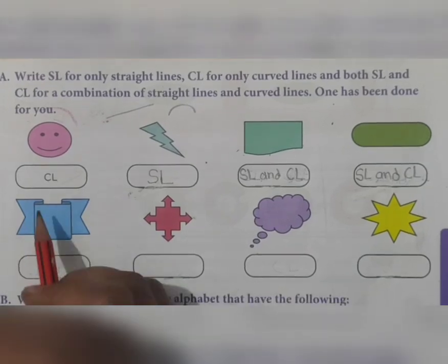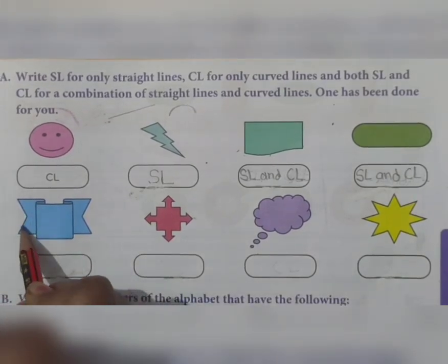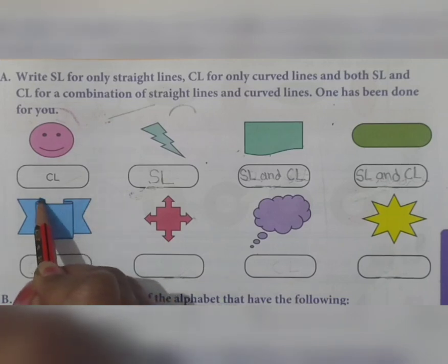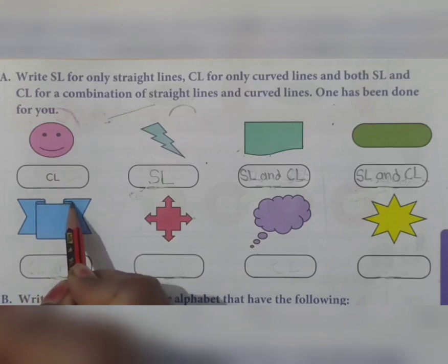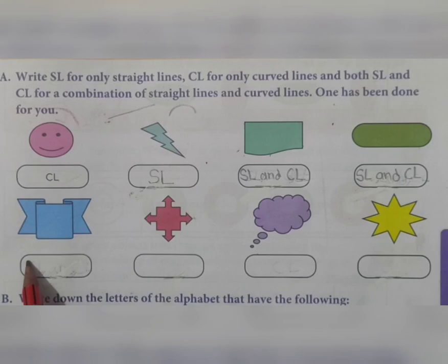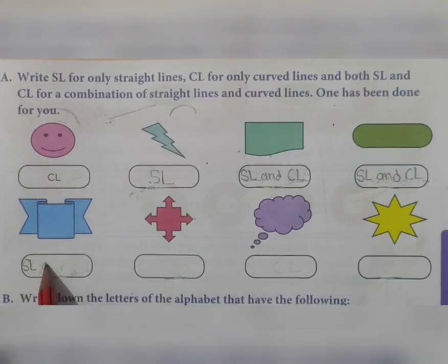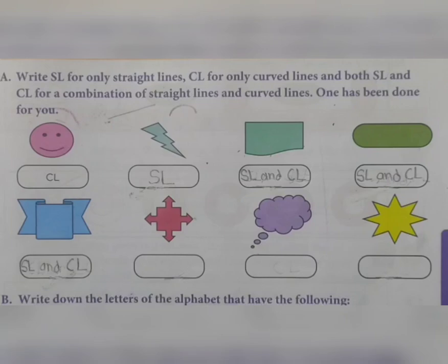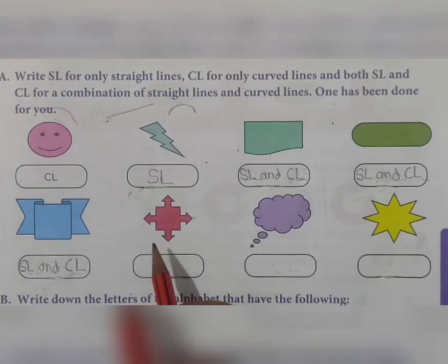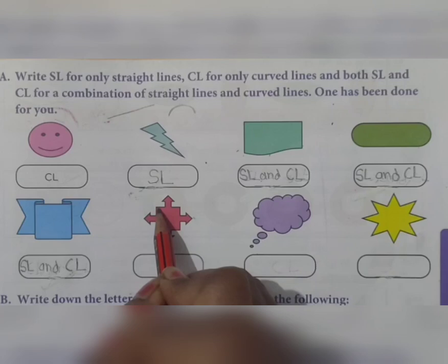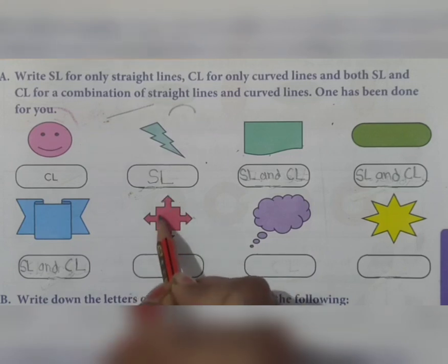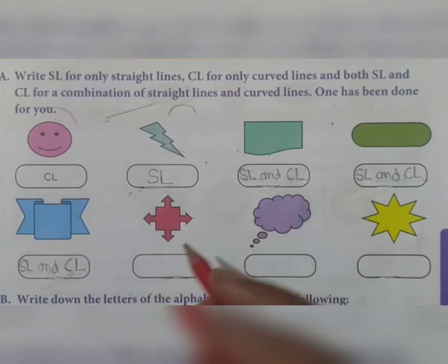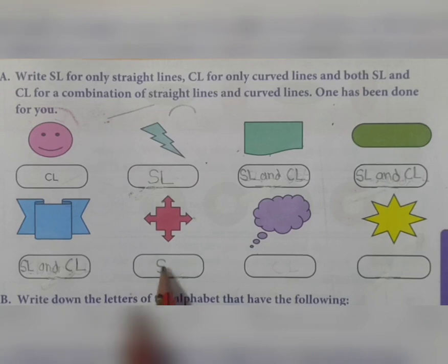In this next figure, there are straight lines everywhere, but at some points there are curved lines. Therefore this figure is made up of straight lines and curved lines. Now in this figure: straight line, straight line, straight line, straight line, and the arrow is also made of a straight line. There is no any curved line, so we write only SL.